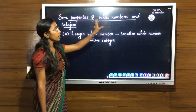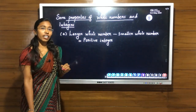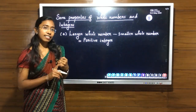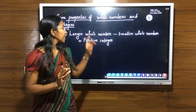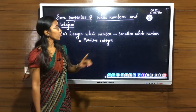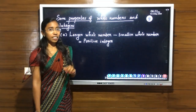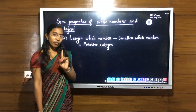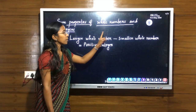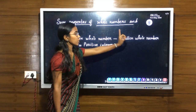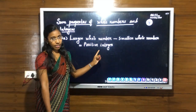Some properties of whole numbers and integers. We know that whole numbers start from 0, 1, 2, 3, etc. Integers are the collection of whole numbers and negative numbers. Our first property: larger whole number minus smaller whole number equals a positive integer.